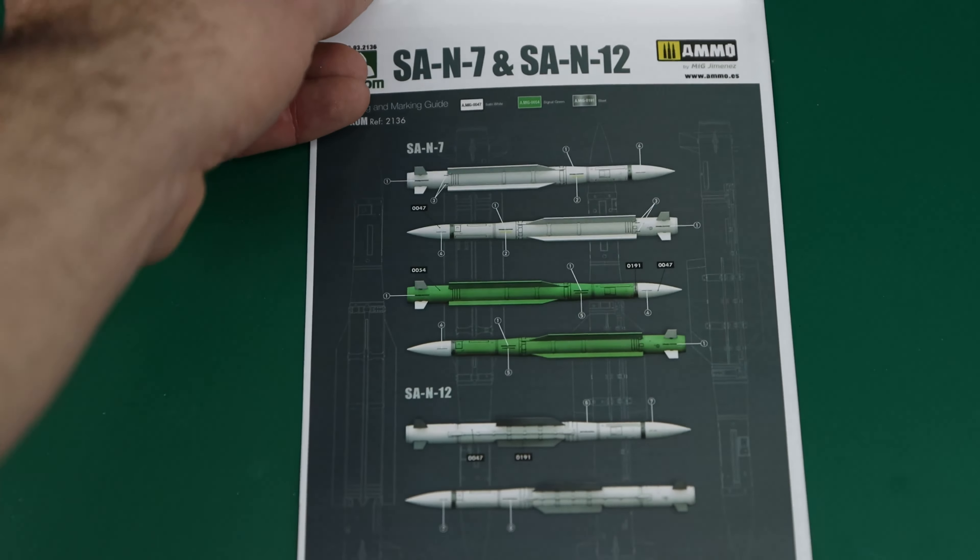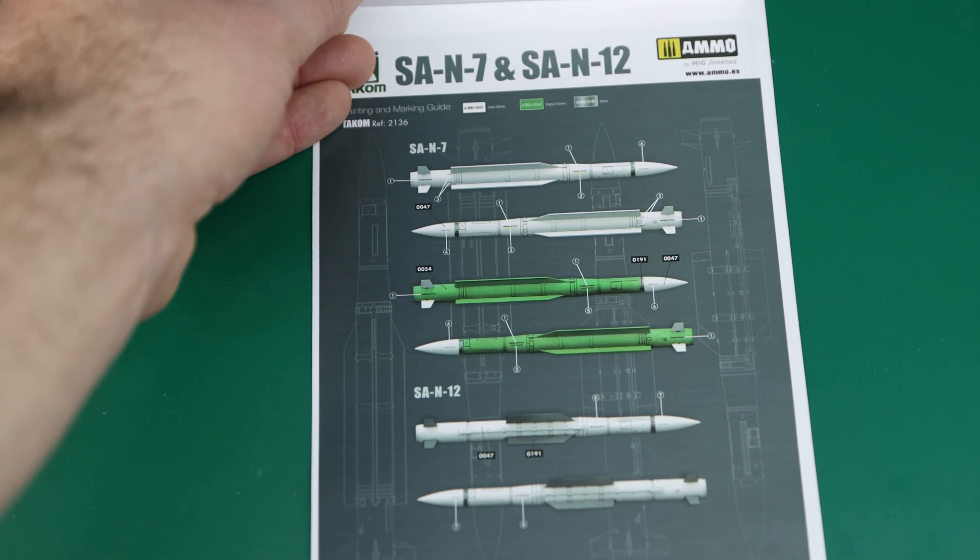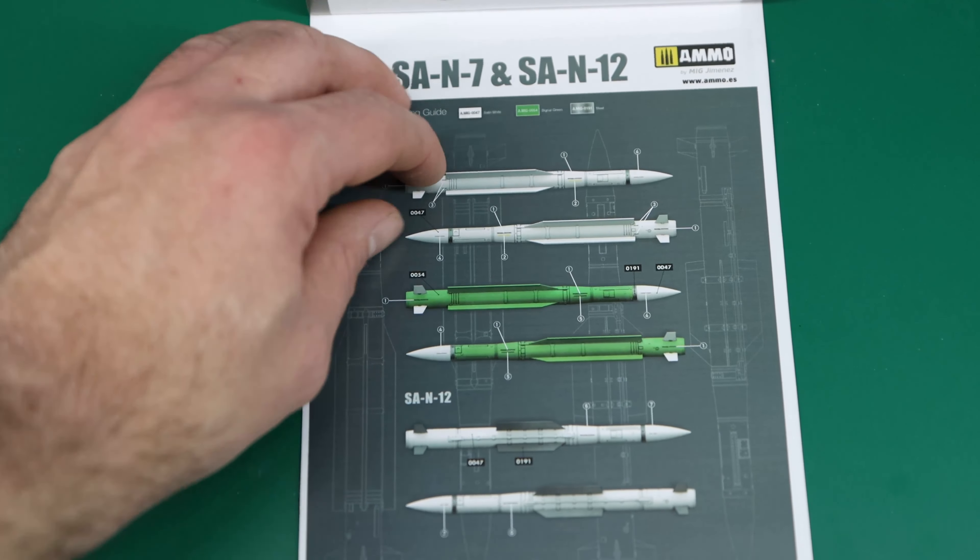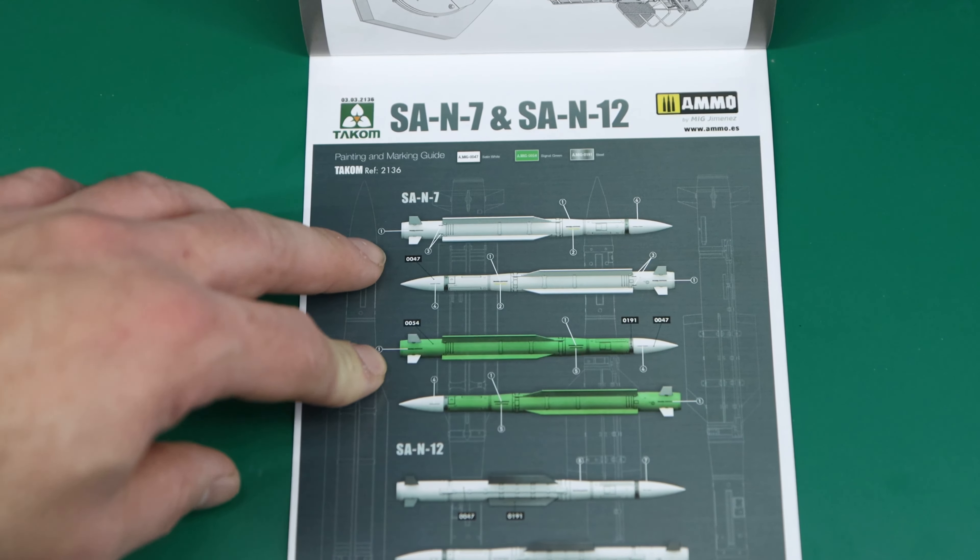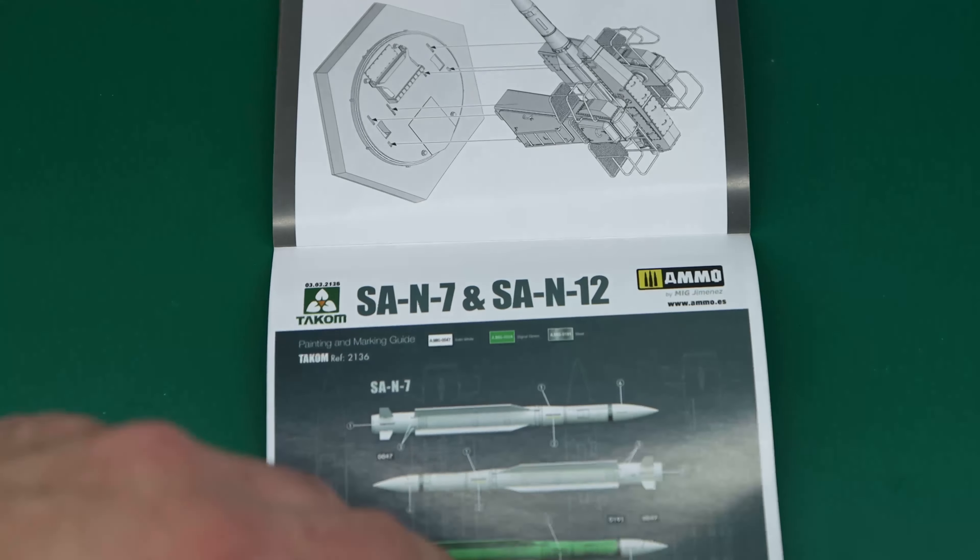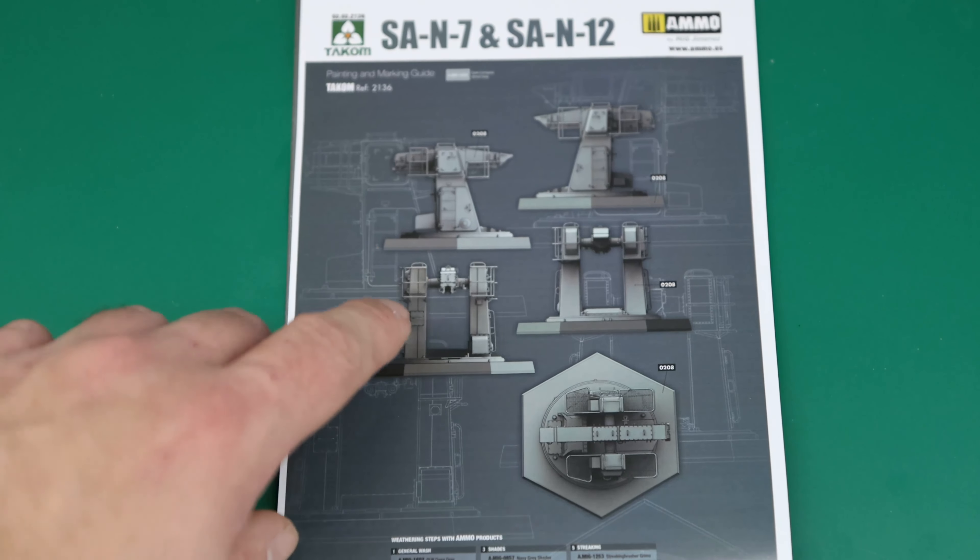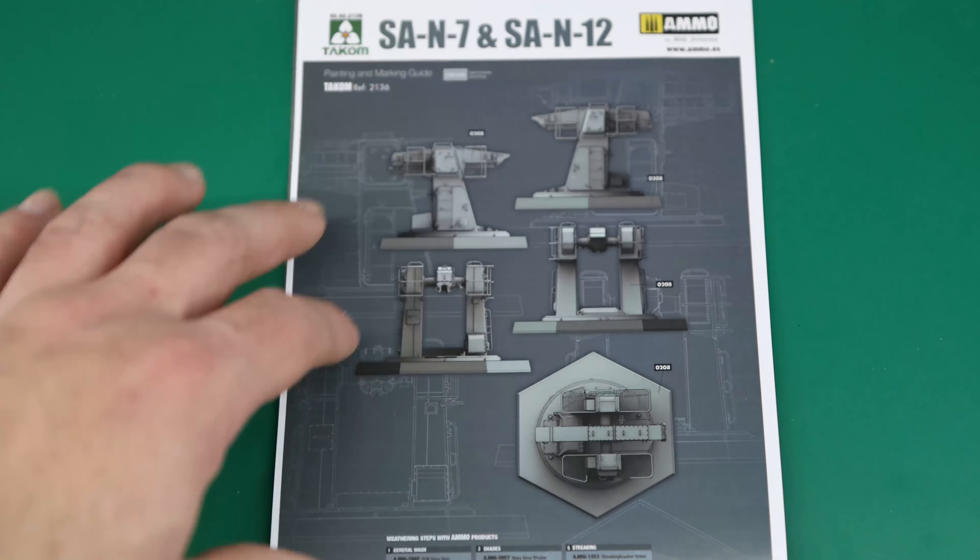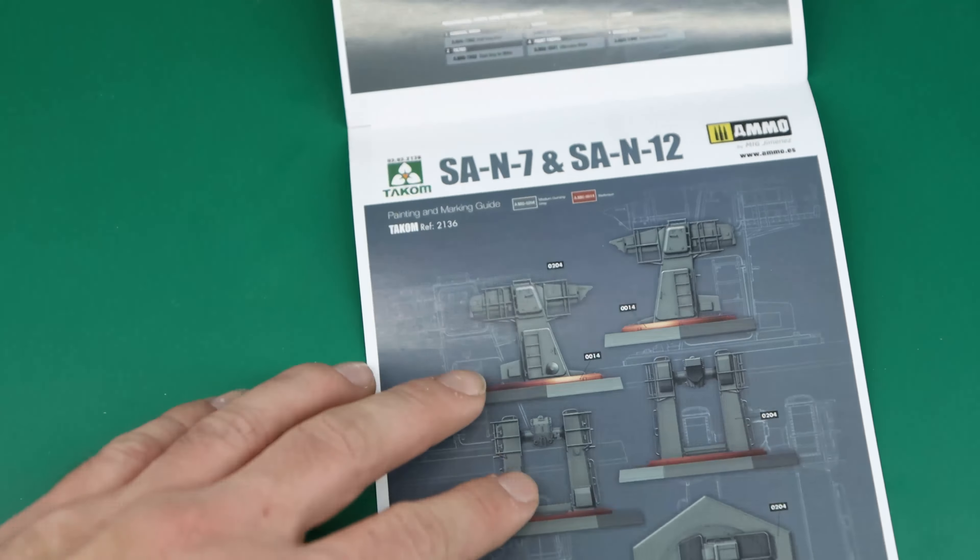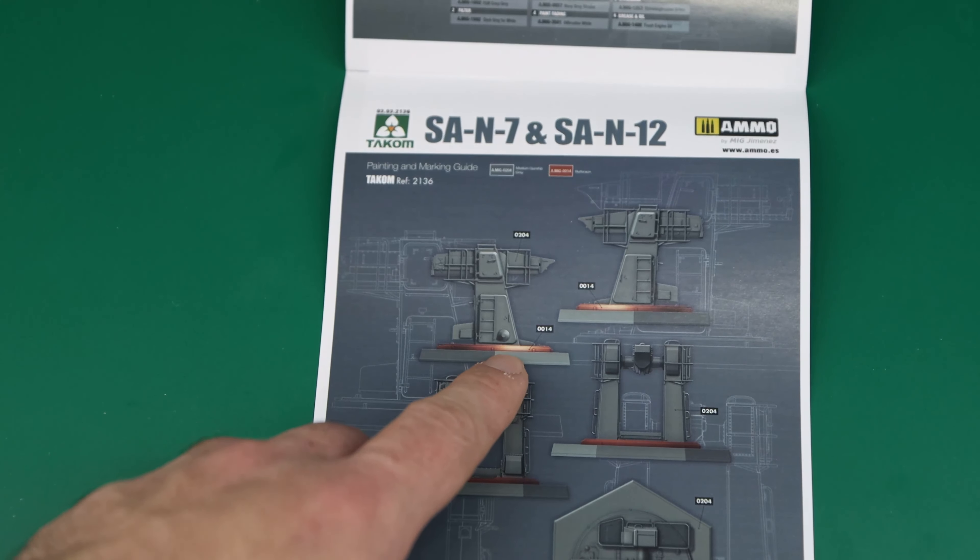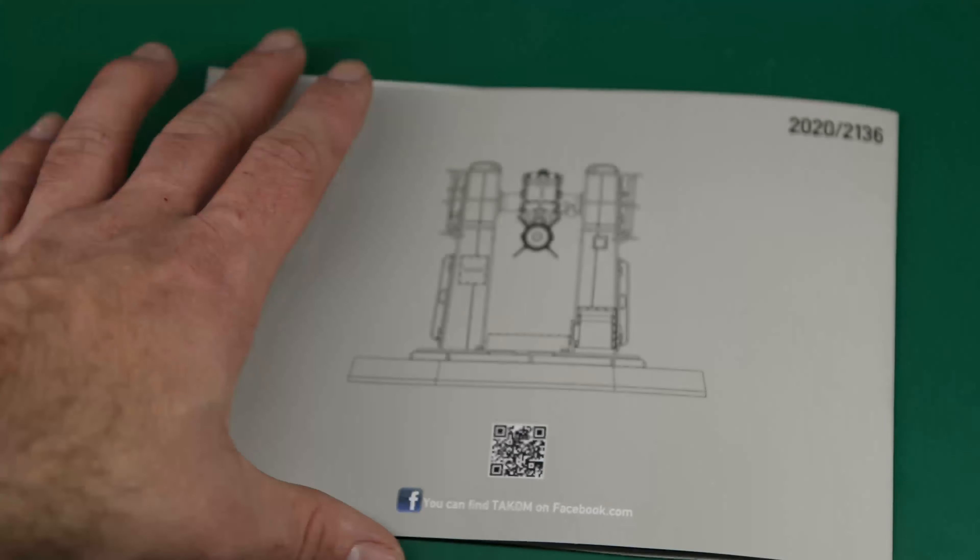As you can see, TACOM includes color for the three variations of the missile you can build. There's actually the two types, but of the one there's two different paint schemes I believe. And then the actual painting of the carrier itself, there's two variations of that. The only difference I notice is this one has like a coppery color ring there. Then that is it.